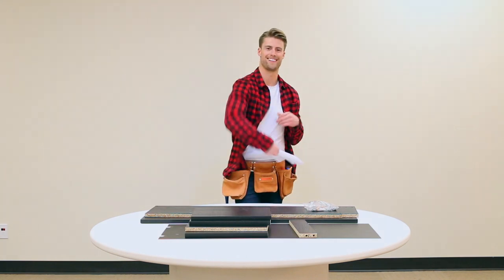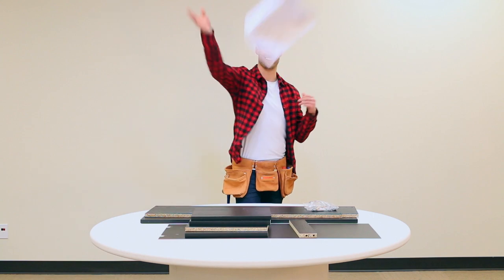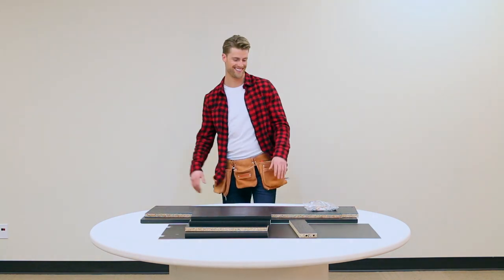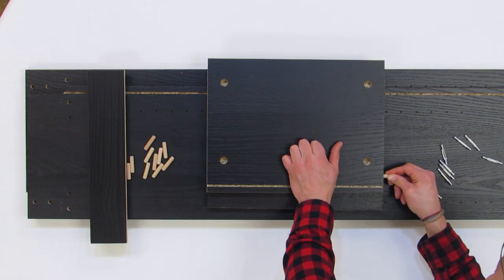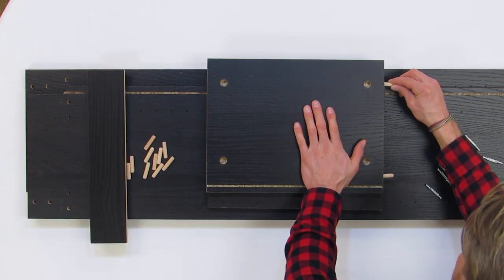After you are finished unboxing and sorting all of the pieces out, you're going to start with inserting four wooden dowels into the three pieces seen here. Two medium pieces along with the one small piece.